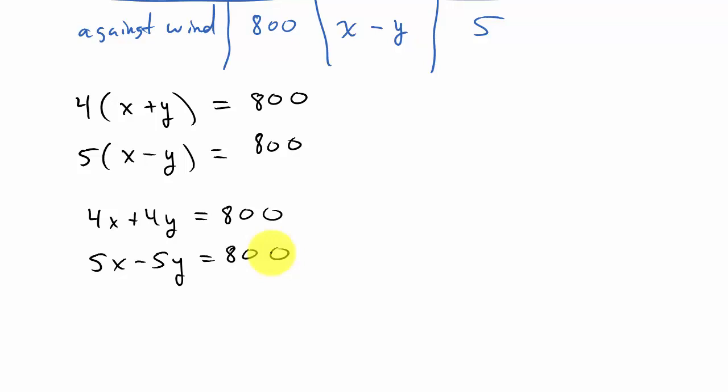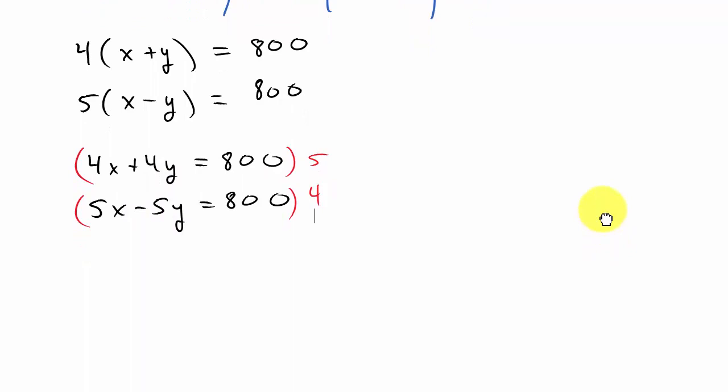So I'm going to use the addition method here. I'm going to make the y values go out. So I'll have to multiply this by 5. That'll give me a positive 20. Multiply this by 4. That'll give me a negative 20. So that is going to give me 20x plus 20y equals 4,000. Multiply the five to each term. Now let's multiply the four to each term in the second one. So that's 20x minus 20y equals 3,200.